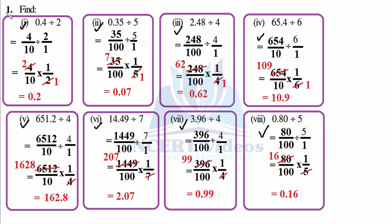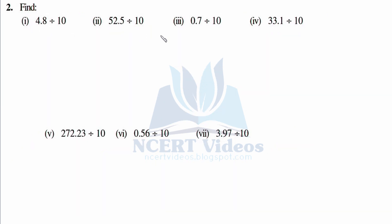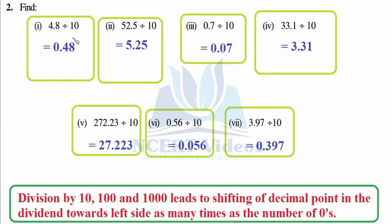Second: find 4.8 divided by 10, 52.5 divided by 10, 0.7 divided by 10, and other questions. First part: 4.8 divided by 10. What you observe in this question is that all questions have division by 10. We have read in this chapter that division by 10, 100, or 1000 leads to shifting of the decimal point in the dividend towards the left hand side. This is the reverse of multiplication. So write 48 as it is, count the number of zeros — here it is 1 — you move one digit towards the left hand side.